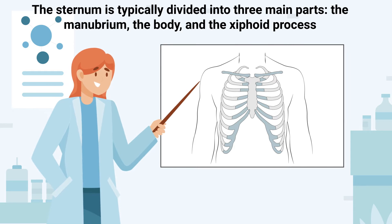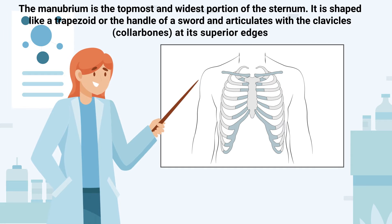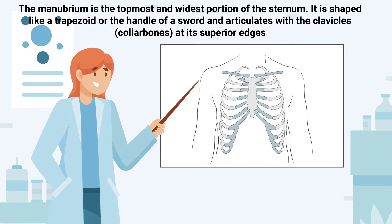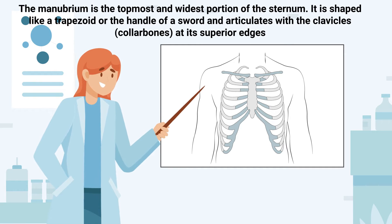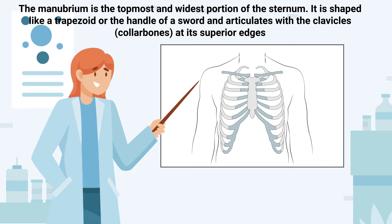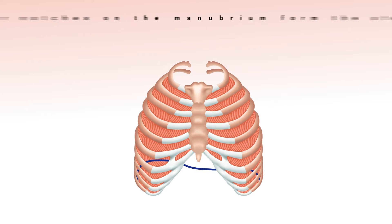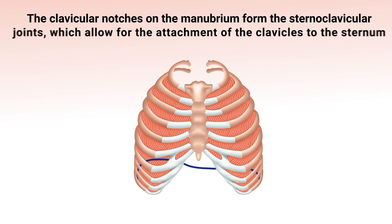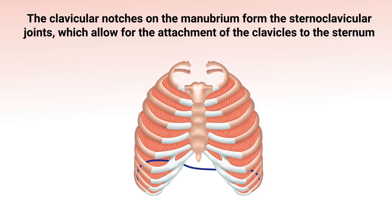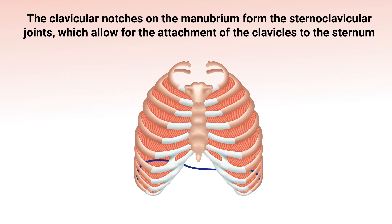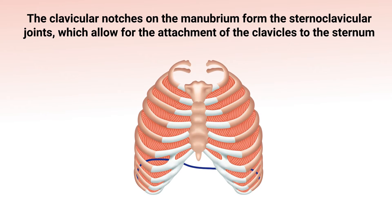The manubrium is the topmost and widest portion of the sternum. It is shaped like a trapezoid or the handle of a sword and articulates with the clavicles at its superior edges. The clavicular notches on the manubrium form the sternoclavicular joints, which allow for the attachment of the clavicles to the sternum.